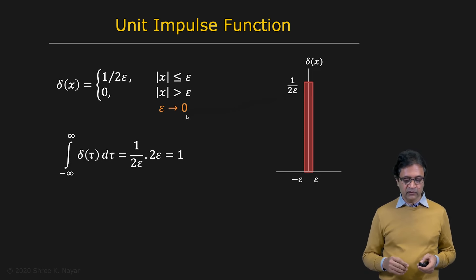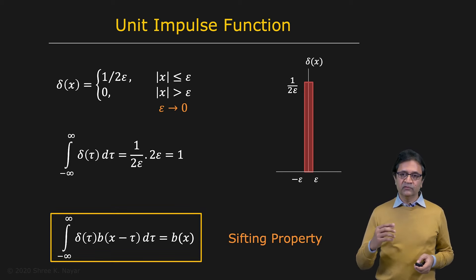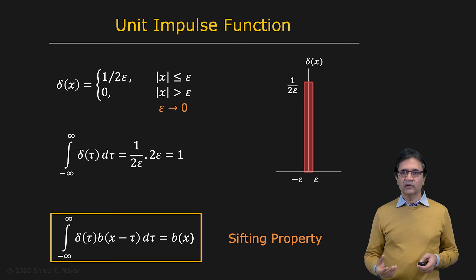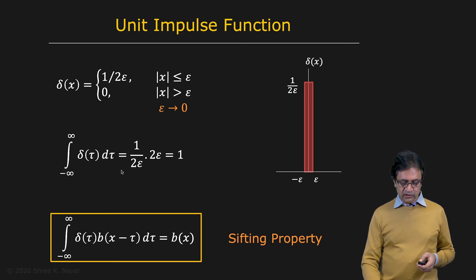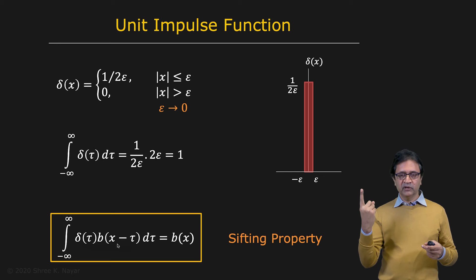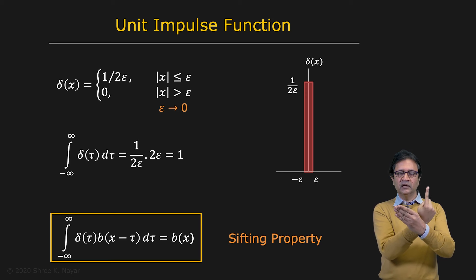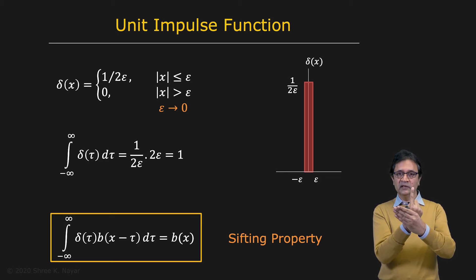So now what happens is, if you convolve any function with a unit impulse function, you can visualize what happens. Here is a unit impulse function — you flip it, you get the same thing, you take it to minus infinity, and you're going to slide it. And at each point, you're going to do the product with the function and the integral, but you're integrating over this very small infinitesimal extent.